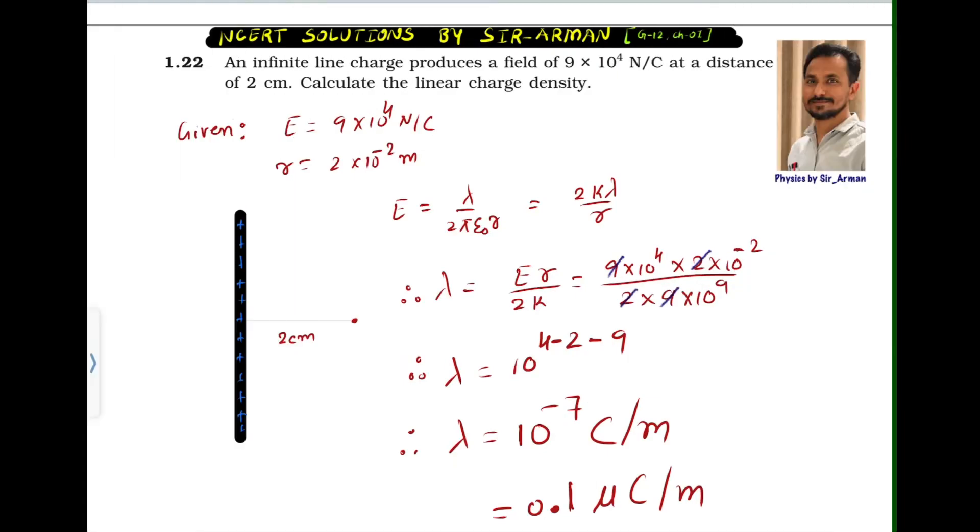Question number 1.22. An infinite line charge produces a field of 9×10^4 Newton per coulomb at a distance of 2 centimeters. Calculate the linear charge density.